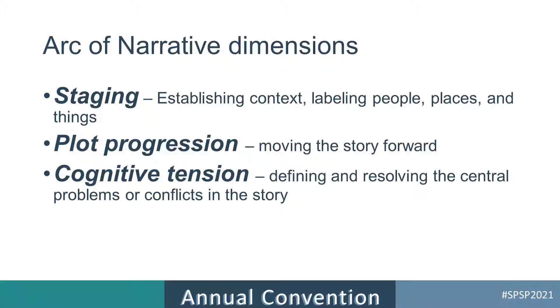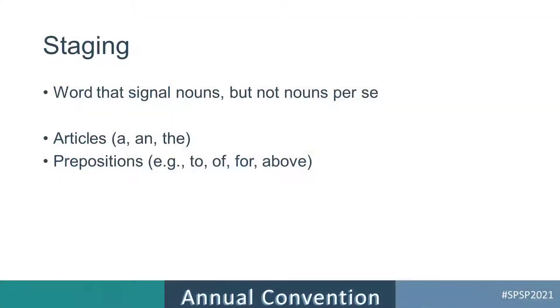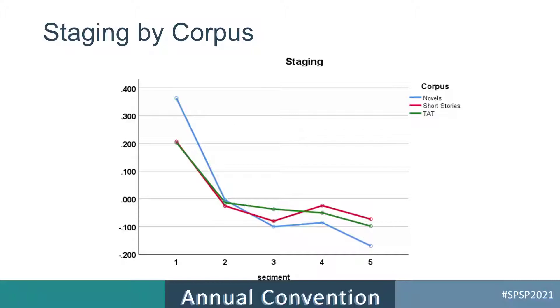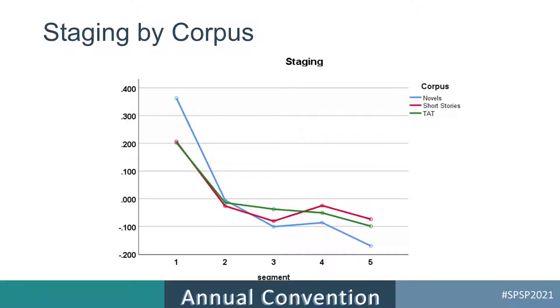The first dimension is staging. When you're just beginning to tell a story, the first thing you have to do is lay out where the people are, who the people are, what the situation is — you have to label things. At the beginning of a story there are lots of nouns, and one thing that goes with nouns are articles — "a," "an," and "the" — and prepositions. Articles and prepositions are powerful proxies for nouns. If you're studying staging, you will have a high rate of those at the very beginning of the story and they drop over time, because you don't need to continue making reference to people and objects in a formal way. That's what we found.